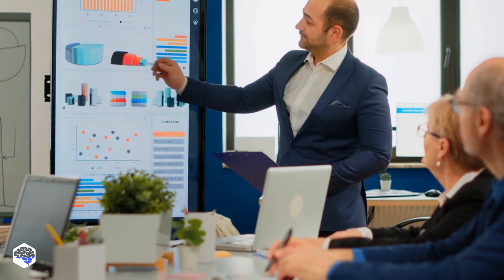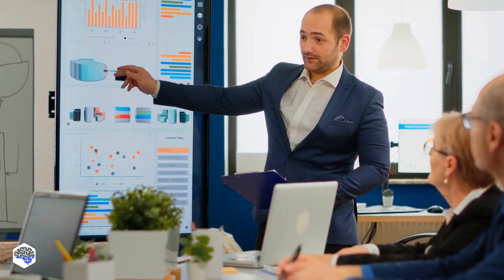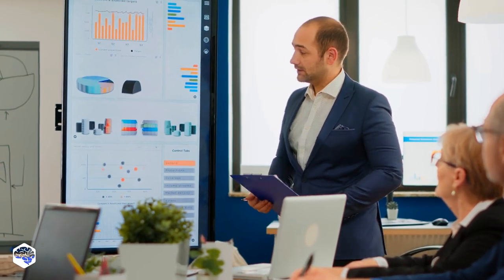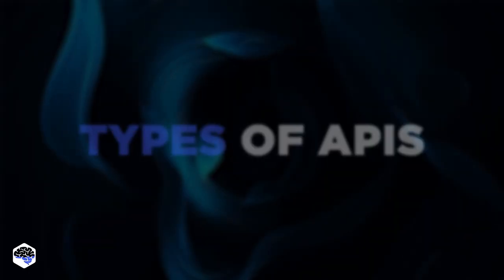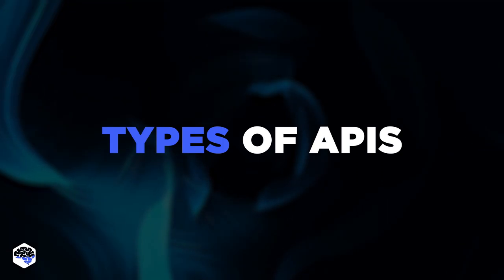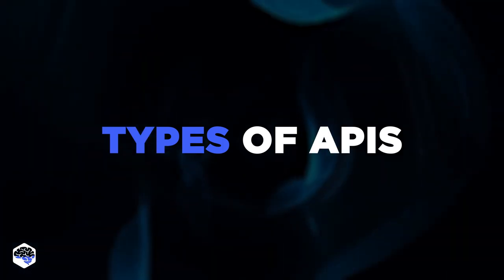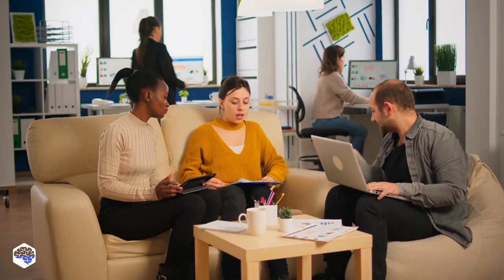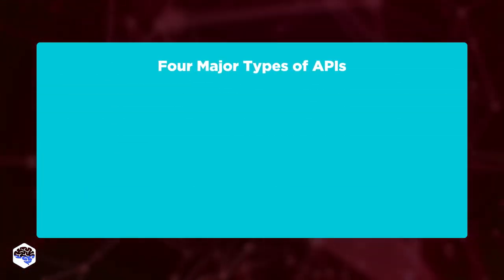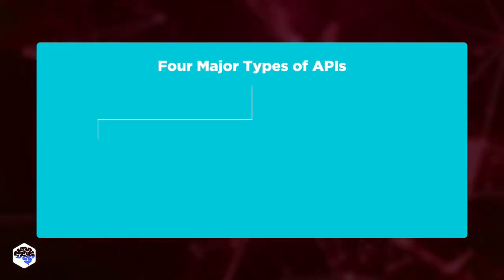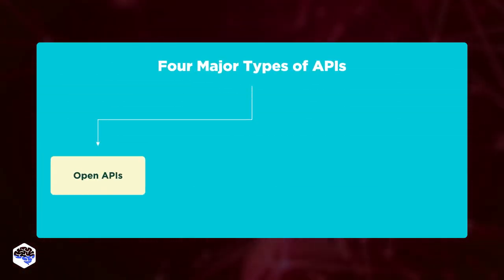Are there different types of APIs? Yes. Watch further to review four main types of APIs in use, available and buildable, depending on the intended use. Among API types, we define Open APIs.